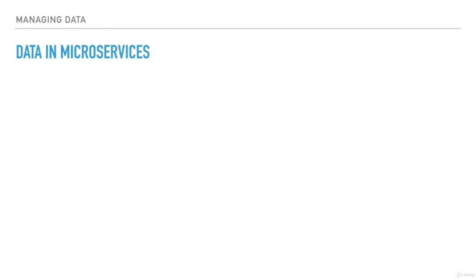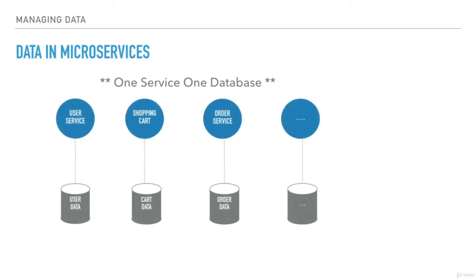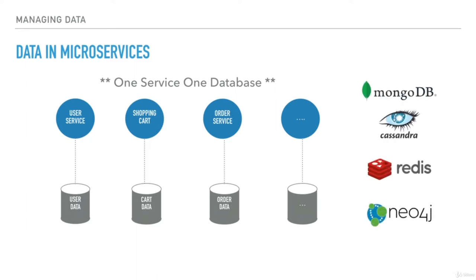Data in microservices is managed differently. To achieve loose coupling, microservices should follow a one-service, one-database model. This means each service — user service, shopping cart service, order service, etc. — will have its own database. User service manages the user data, shopping cart service manages the cart data, and so on. Data can be exposed through the service APIs. Each microservice can choose which database technology to use based on its business needs — be it document-oriented, column-oriented, key-value, graph, or relational. MongoDB, Cassandra, Redis, and Neo4j are some of the popular NoSQL databases available.